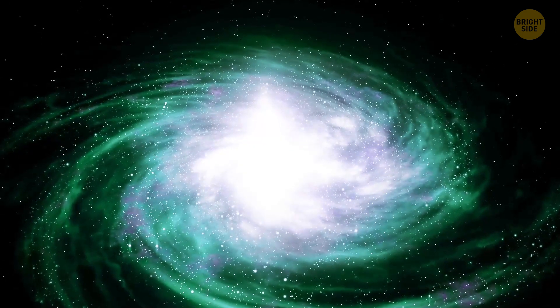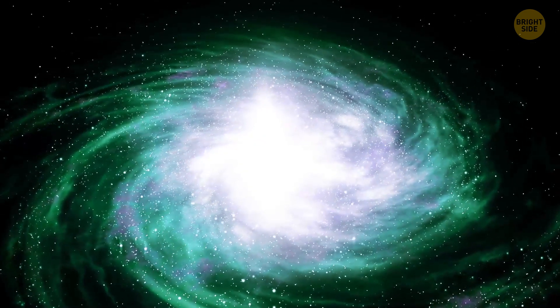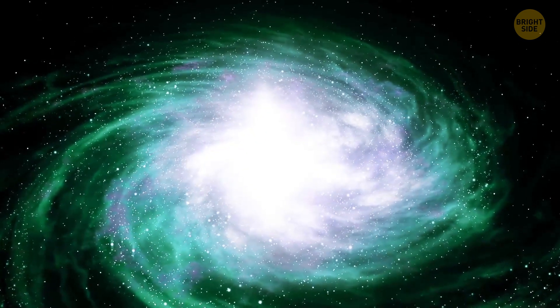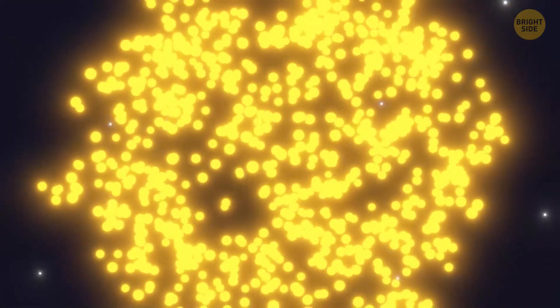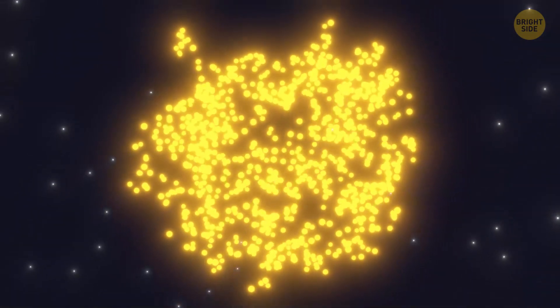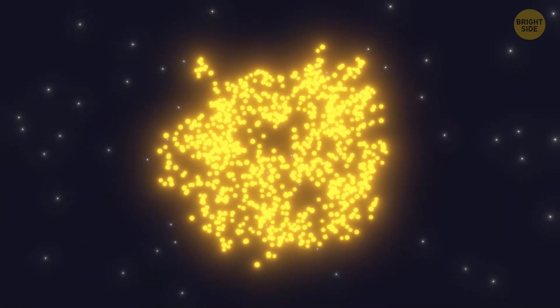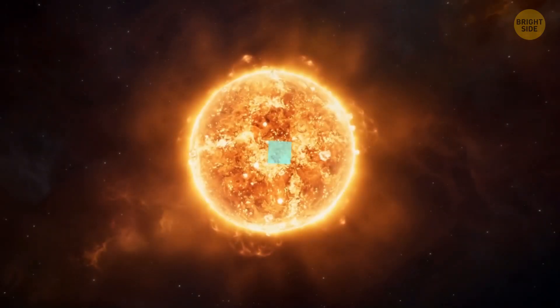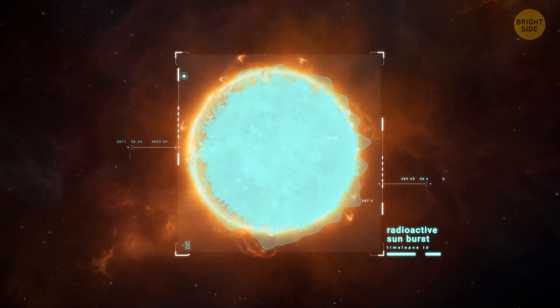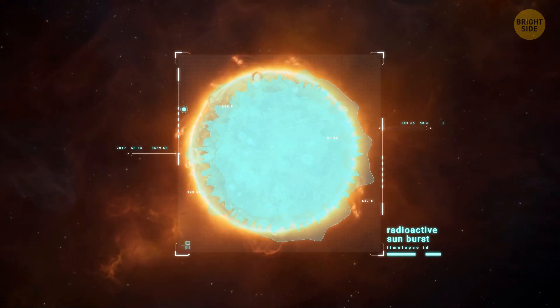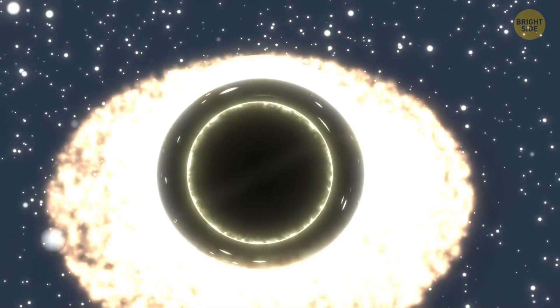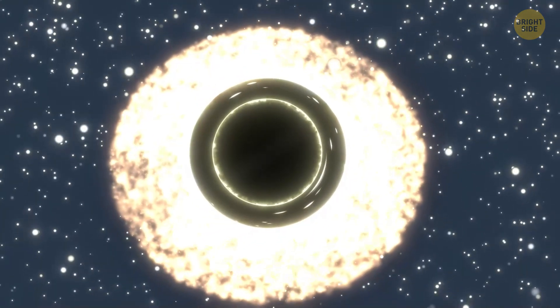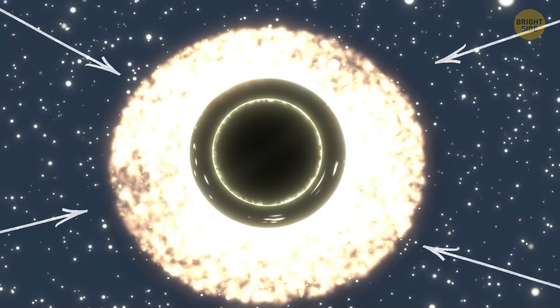But some galaxies get their brightness from a so-called active galactic nucleus. These are extremely energetic regions at the center of some galaxies. They shine much brighter than any stars imaginable, although it mostly shines only in certain parts of the electromagnetic spectrum. The brightness comes not from the stars, but from the accretion disk around their supermassive black holes.